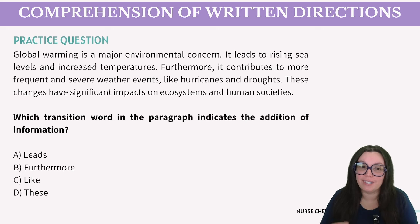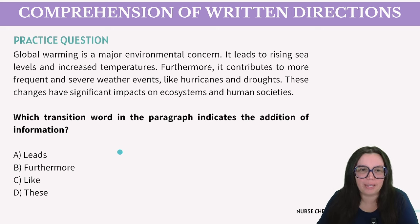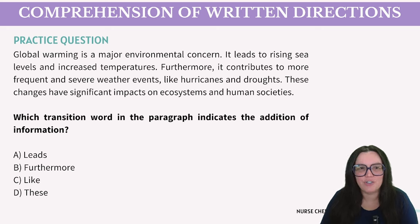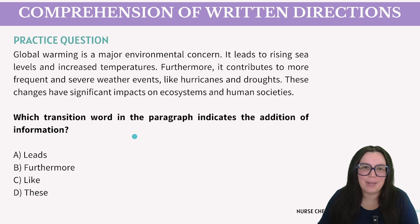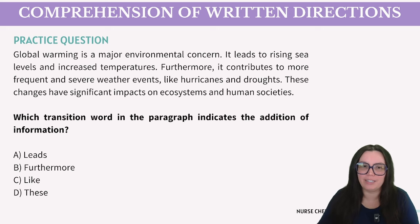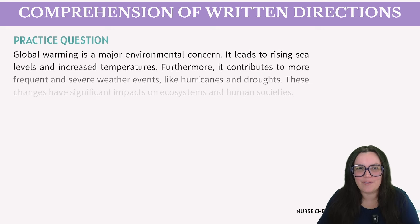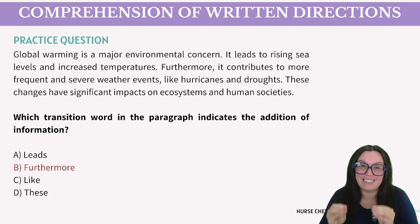Next example: 'Which transition word in the paragraph indicates the addition of information?' The passage: 'Global warming is a major environmental concern. It leads to rising sea levels and increased temperatures. Furthermore, it contributes to more frequent and severe weather events like hurricanes and droughts. These changes have significant impacts on ecosystems and human societies.' The only transition word with a comma at the beginning of a sentence is 'furthermore.' If you can't remember which word is an addition word, look for words at the beginning of a sentence with a comma behind it. The correct answer is B: 'furthermore.'